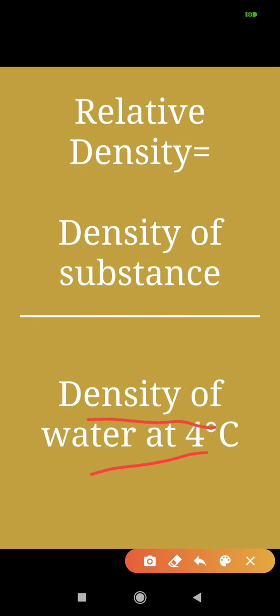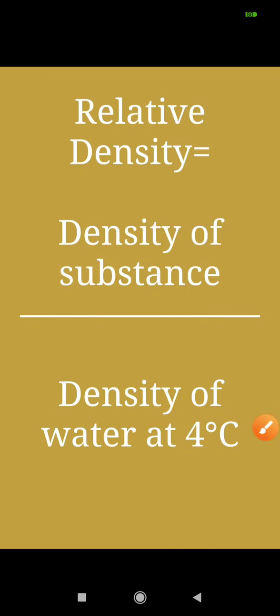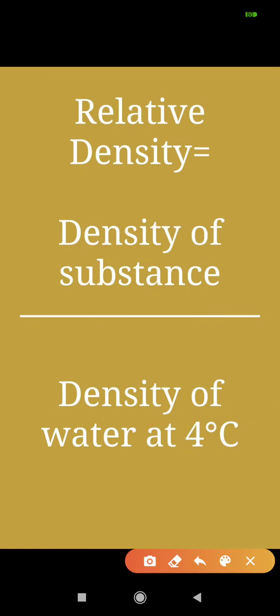This denominator is a common term — the density of water at 4 degrees Celsius will permanently be in the denominator every time, whatever substance we are finding the relative density of. So, relative density is the ratio of density of a substance to the density of water at 4 degrees Celsius.